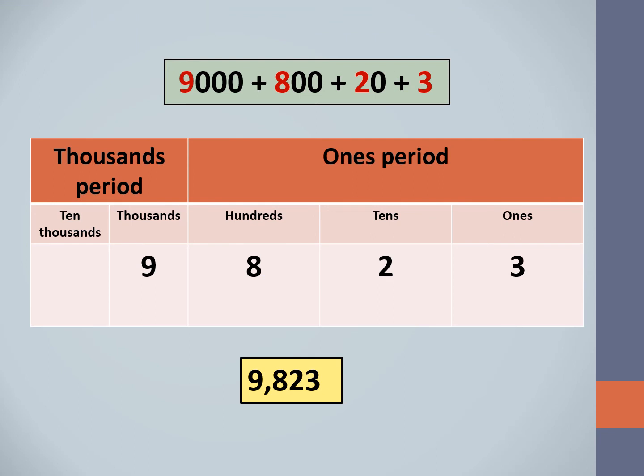To write the standard form, we first identify the place of each digit and write them in the place value chart. Here, we write 9 in the thousands place, 8 in the hundreds place, 2 in the tens place, and 3 in the ones place. So the standard form of the given expanded notation is 9,823. Do not forget to put the comma to separate the periods.